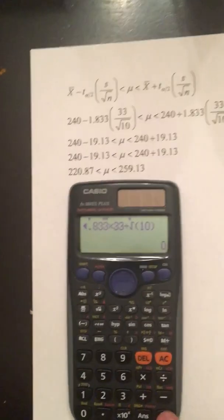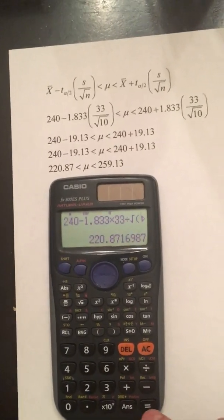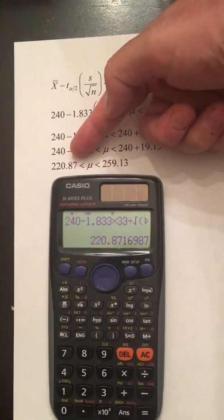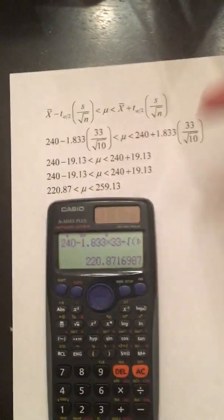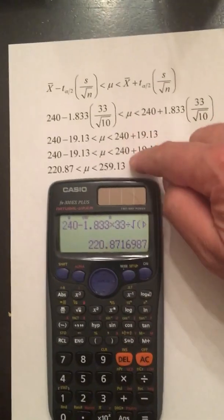We perform the calculation and get 220.87, which is our left endpoint. Then we repeat the process for the right endpoint.